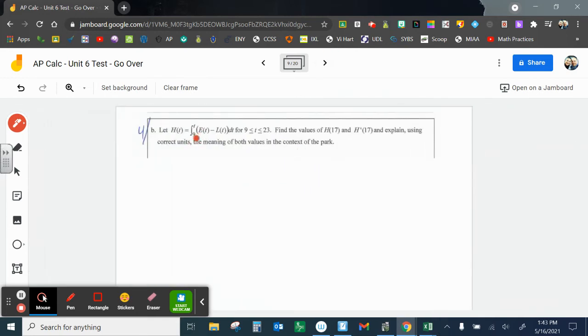Okay, let's take a look at part B. Let H(T) equals the integral from 9 to T of E(T) minus L(T). Find the values of H(17) and H'(17). Explain, using correct units, the meaning of both values in the context of the park. Well, we have this whole thing, and the nice thing is they tell us what E(T) is, they tell us what L(T) is. And when they say to find H(17), what I'm doing is I'm finding the total number of people from 9 a.m. to 17. What does that represent? 17, we just said, was 5 p.m. This is how many total number of people that entered and then the total number of people that have left.